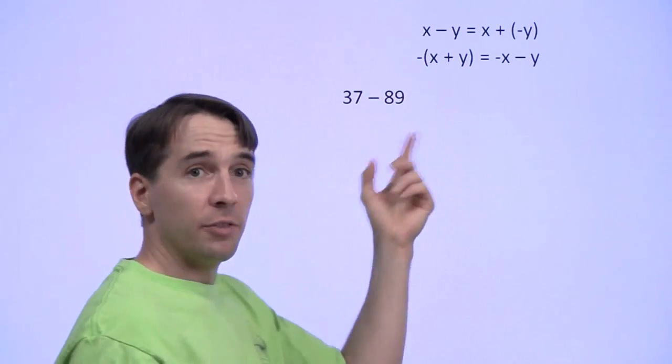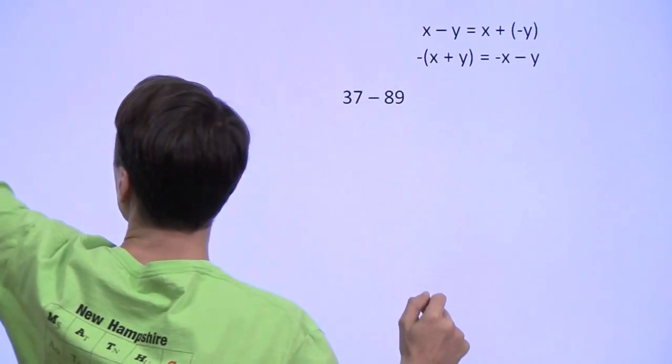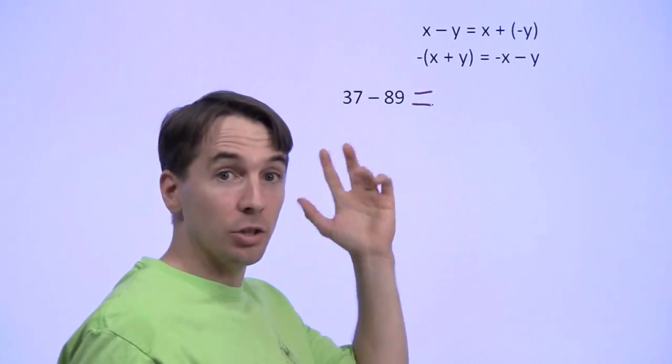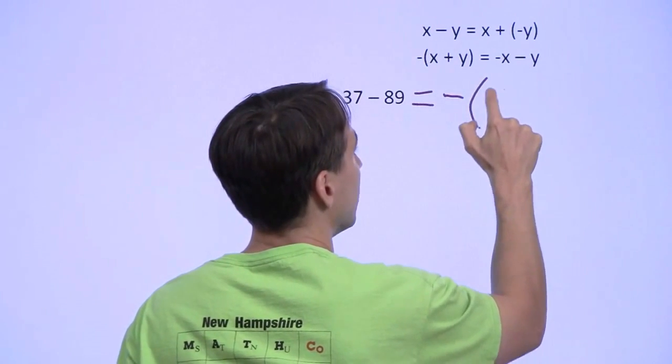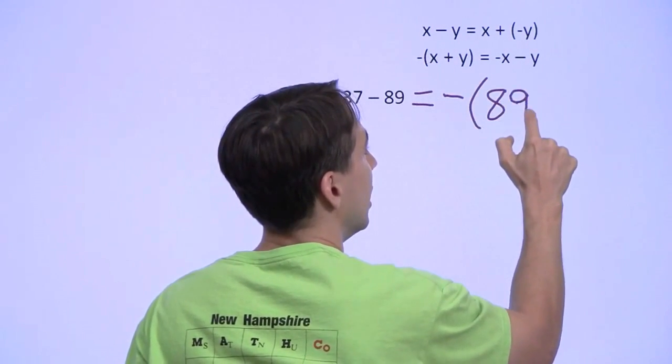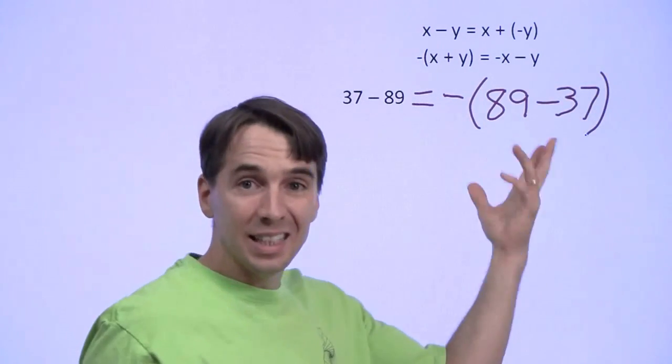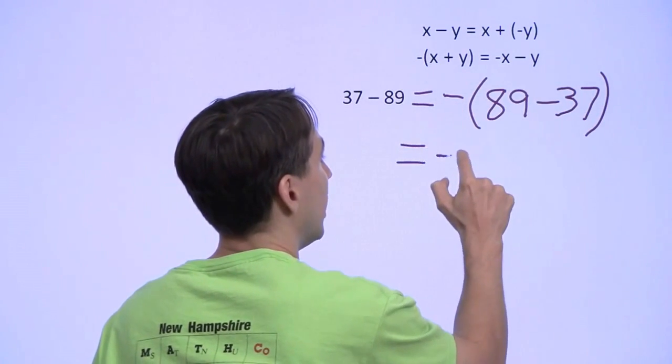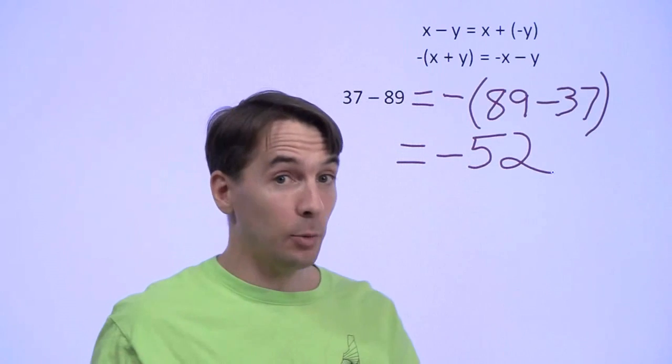The opposite of 37 minus 89 is 89 minus 37. In other words, to solve this problem, I can look at this subtraction, 37 minus 89, as the opposite of 89 minus 37. And that's easy to compute. 89 minus 37, that's just 52. So our answer is negative 52. And we're done.